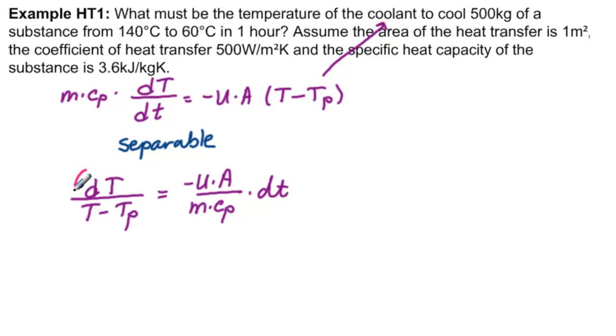We would have dT over T minus TP equals minus UA over M times CP times dt. Integrate both sides. These are all constants. We get ln of T minus TP, that's the easy part if you don't put the minus. Minus U times A over M times CP times t plus some constant C prime.